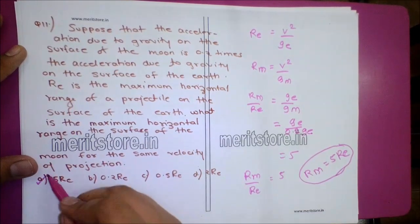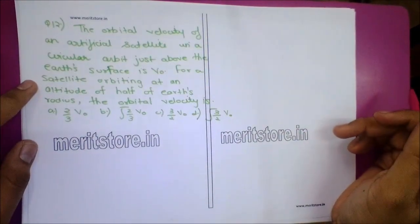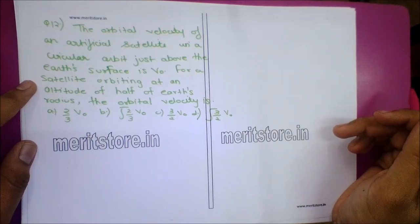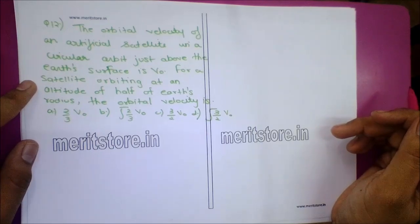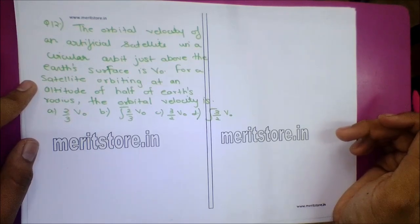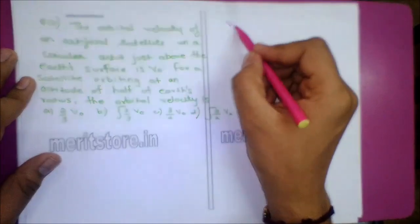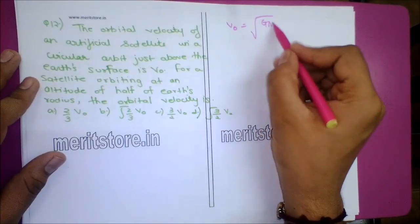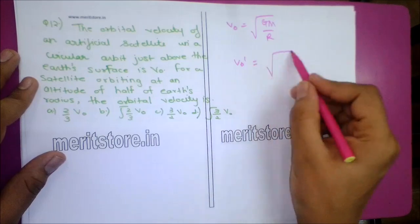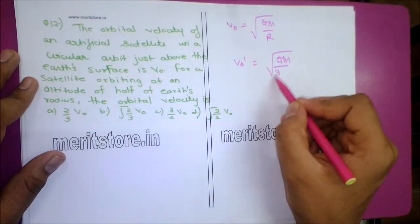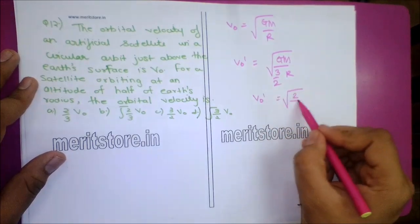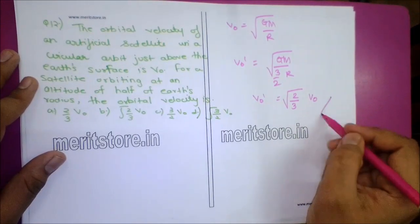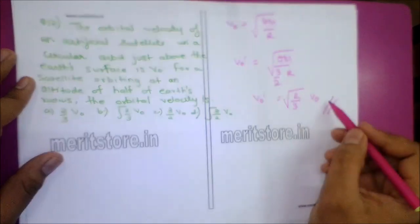Question 12: The orbital velocity of an artificial satellite just above the Earth's surface is V0. For a satellite orbiting at an altitude of half the Earth's radius, the orbital velocity is V0' = √(GM/(3R/2)) = √(2/3) × V0. Option B is the correct answer.